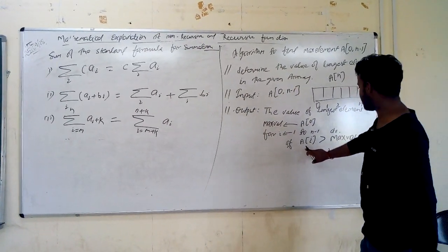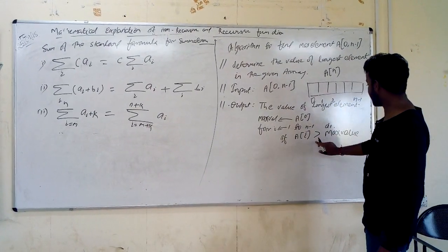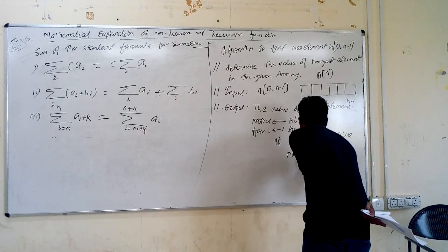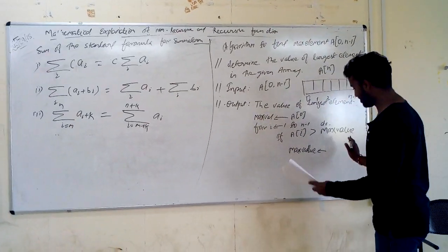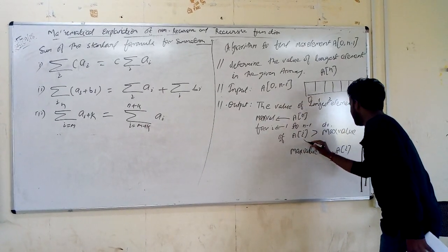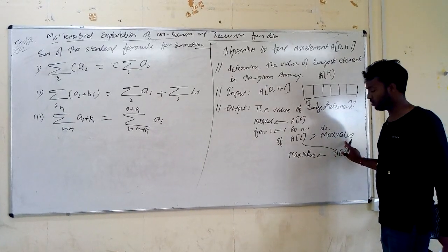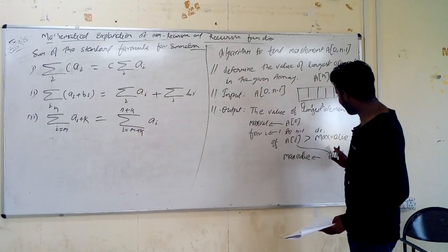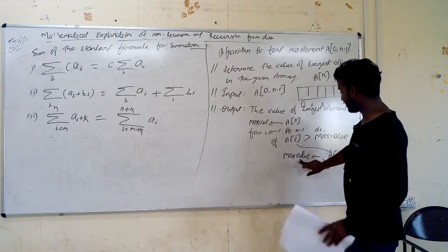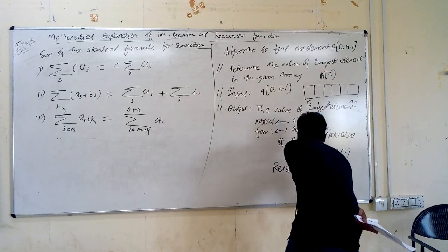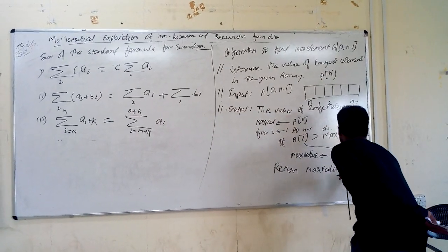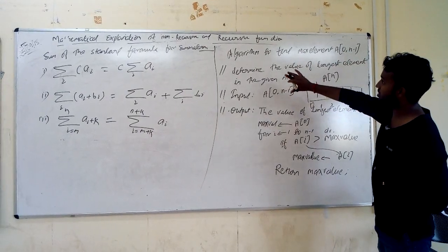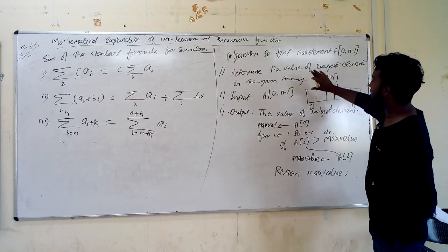Here we use a conditional statement: if any element A[i] is greater than the current maximum value, we assign that value as the new maximum. If the condition is true, this algorithm finds the maximum in any array. This is the non-recursive algorithm to find the maximum in an array.